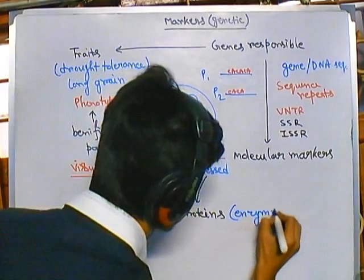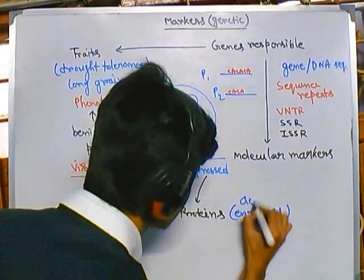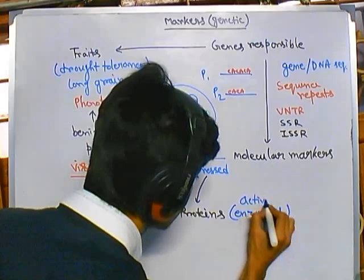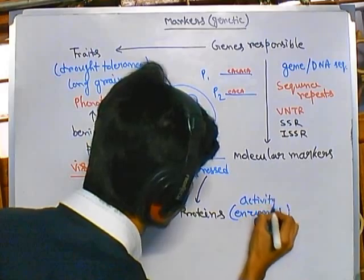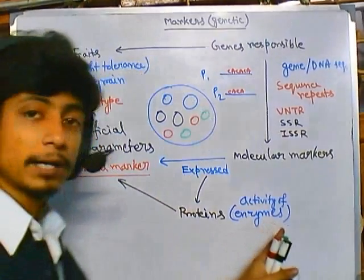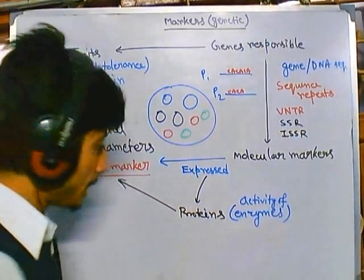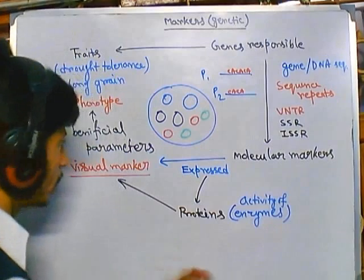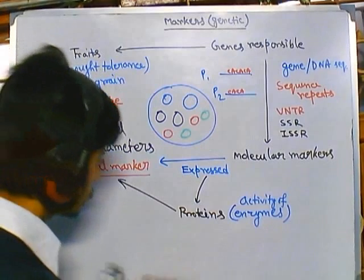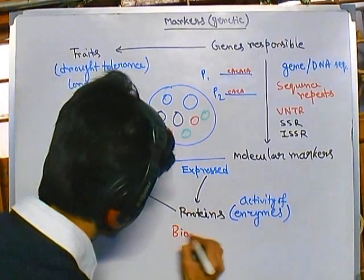These molecules — proteins and enzymes — if we take the activity of an enzyme as a type of marker, we can also use them as a marker. They would be called biochemical markers.